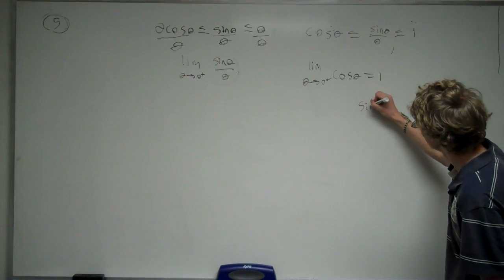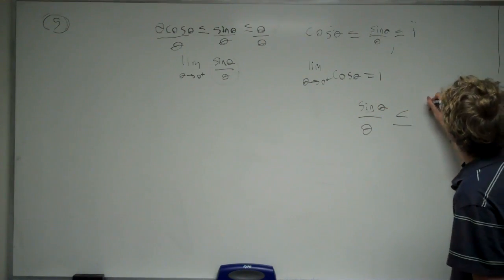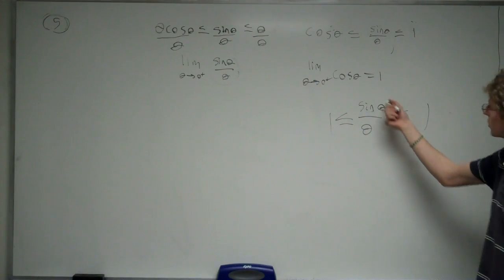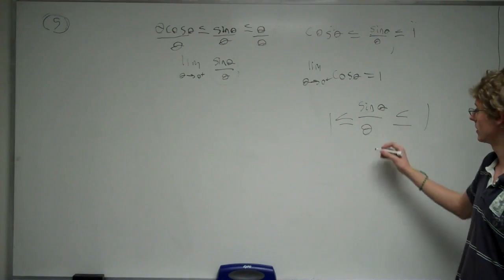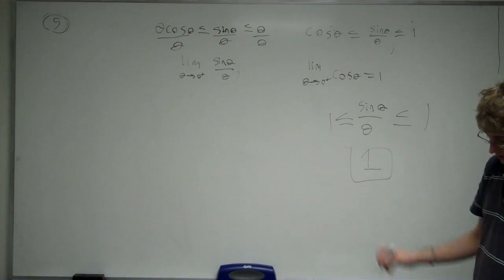So what we get is sine of theta divided by theta is between 1 and 1, meaning that the only value this can equal is 1. So that's our answer.